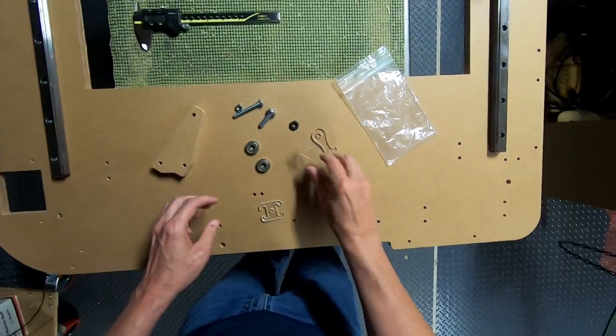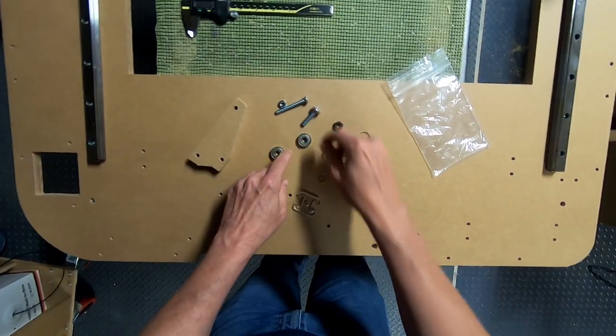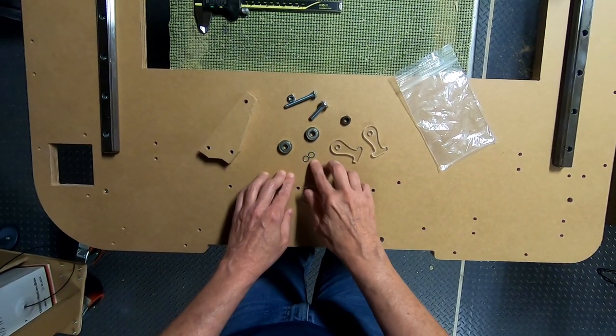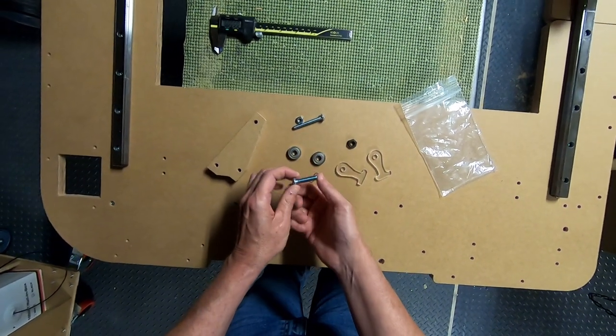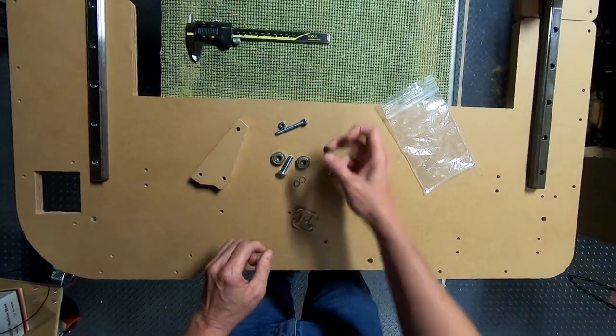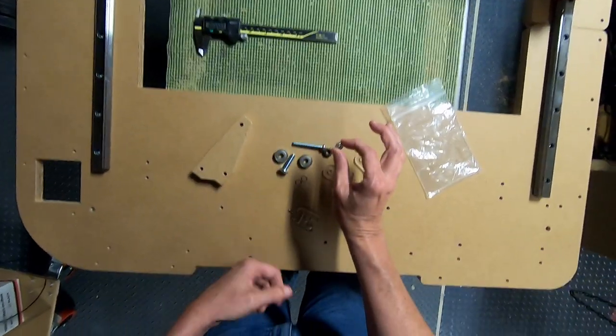So you'll need two of these parts. They look like little fishies. You'll need one of these, two of these shim washers, 608Z bearings, one 8mm M8 screw, an M8 nut, a 2 inch, 1.25 inch screw, and a 1.25 inch nut.